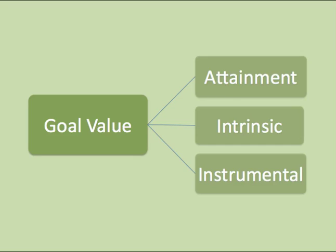Students may attach all three types of value to a single goal. They engage in learning because they enjoy the experience and want to become competent in the subject, but they may also view the instructor's praise and recognition as important. Motivational research shows that when people are concerned primarily with external rewards, their effort, persistence, and quality of work tend to be lower than those who are concerned more with mastery and intrinsic value. Moreover, teachers can influence students' value for learning through the types of rewards, praise, and recognition they use. Different types of praise can support or undermine students' intrinsic interest in learning.